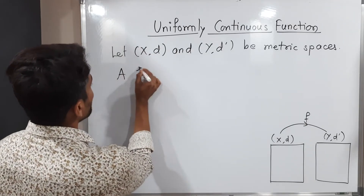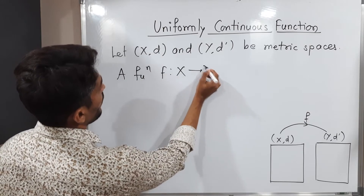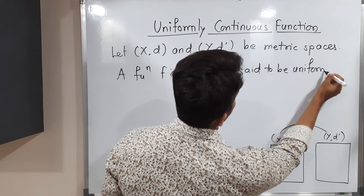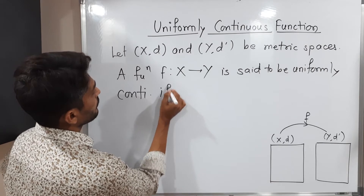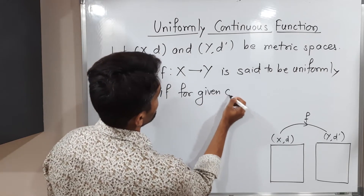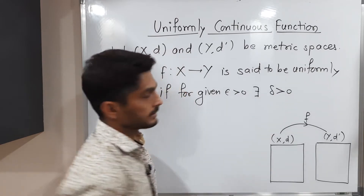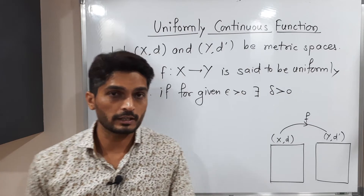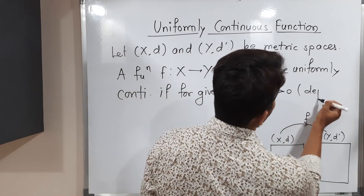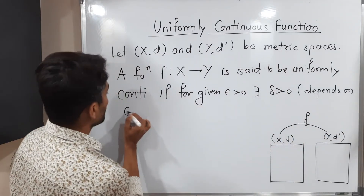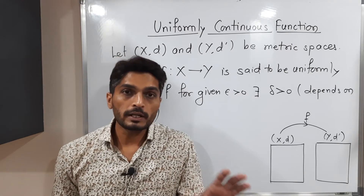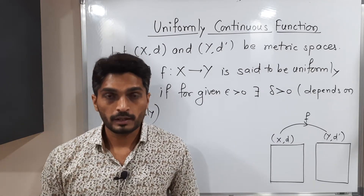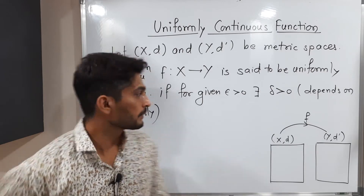A function f from X to Y is said to be uniformly continuous if for a given epsilon greater than zero, there exists delta greater than zero. We do the same thing as in the definition of a continuous function, but here the difference is that delta depends on epsilon only. In our usual definition of a continuous function, delta depends on epsilon as well as the point where we discuss continuity, but here delta depends on epsilon only.